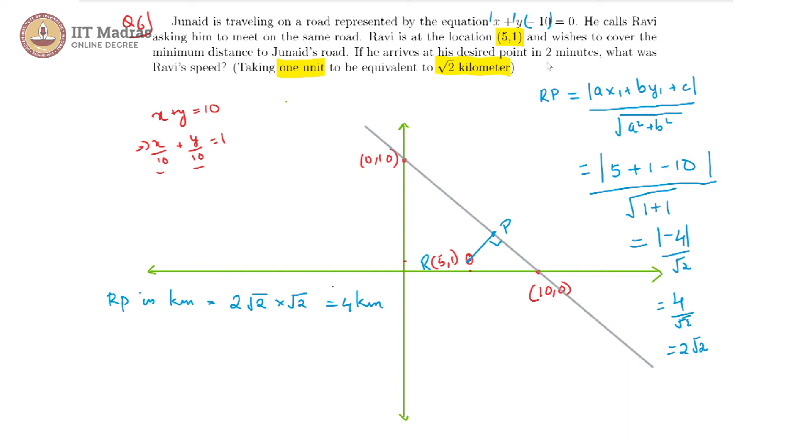And Ravi's taken 2 minutes, if we write it in hours, t in hours is then 2 by 60, that is 1 by 30 hours.